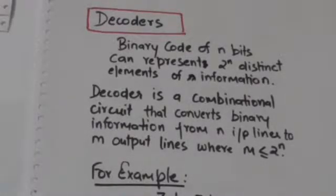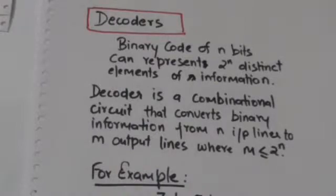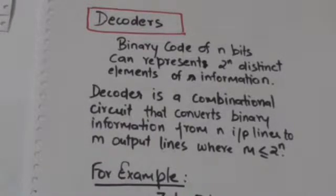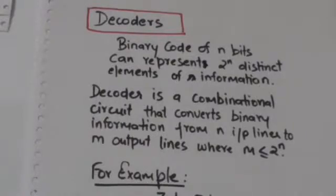Hello friends, welcome back. In this tutorial we will study about decoders. We know that binary code of n bits can represent 2 raised to power n distinct elements of information. A decoder is a combinational circuit that converts binary information from n input lines to m output lines, where m is less than or equal to 2 raised to power n.